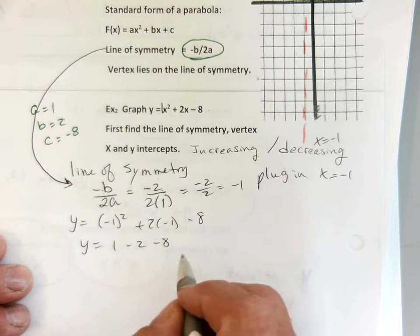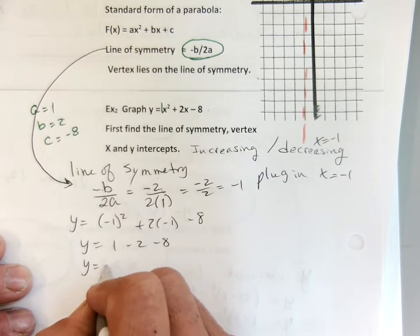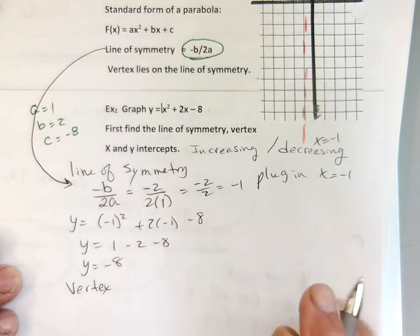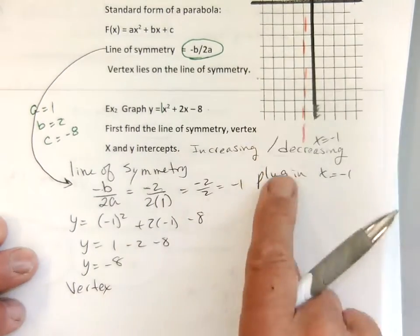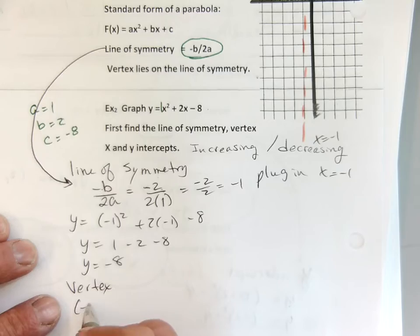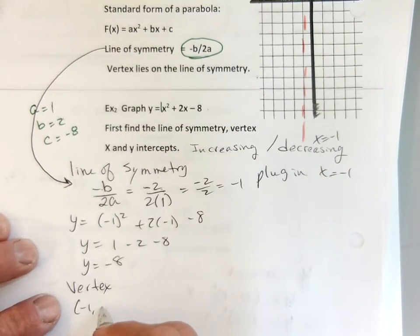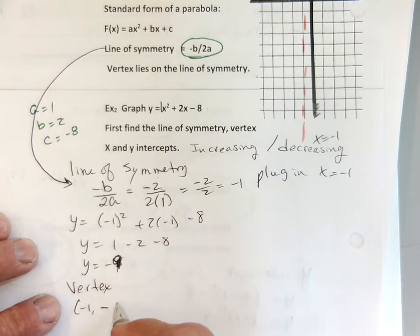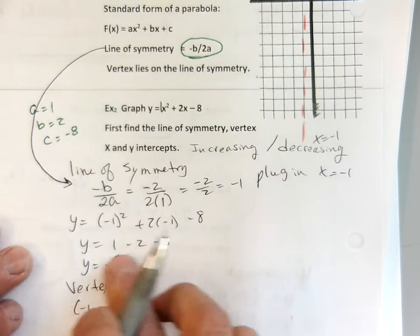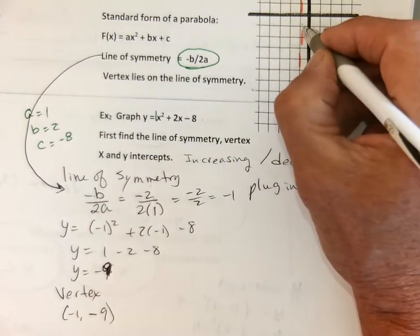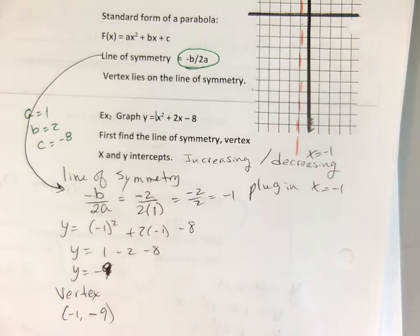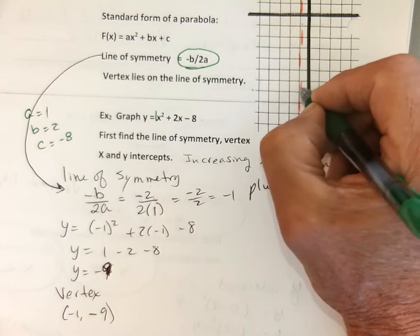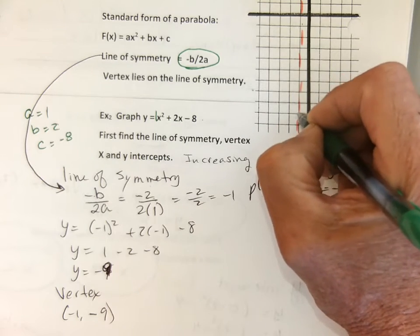That's going to give me negative 9. So my vertex has to lie along this line — my vertex is at negative 1, negative 9. 1, 2, 3, 4, 5, 6, 7, 8, 9 — there's my vertex.